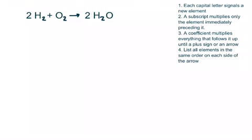Determining if a chemical equation is balanced, that is, whether or not it obeys the Law of Conservation of Matter, requires counting the number and types of atoms on either side of the arrow. This is accomplished by keeping four simple rules in mind.